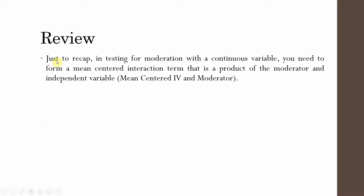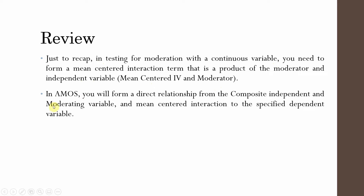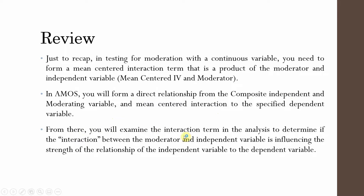Here is a general recap before we discuss how to report your moderation analysis. In testing for moderation with a continuous variable, you need to form a mean-centered interaction that is the product of the moderator and independent variable — mean-center your IV and moderator, then create an interaction term. In AMOS, you form a direct relationship from the composite independent and moderating variable and the mean-centered interaction to the dependent variable, then examine whether the interaction term is significant.